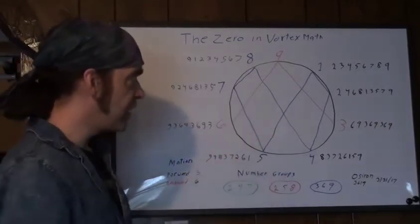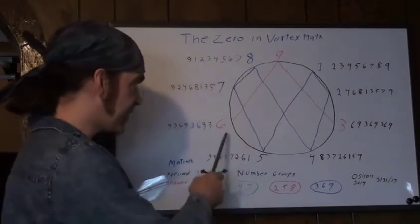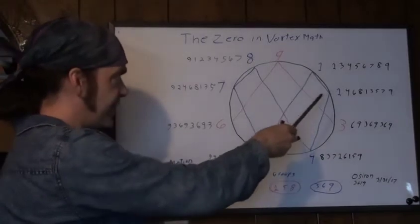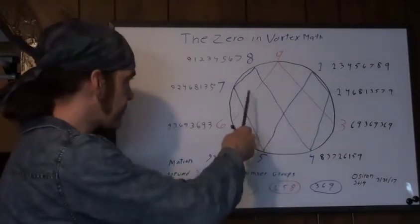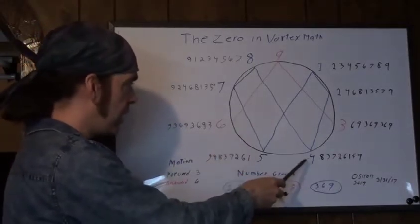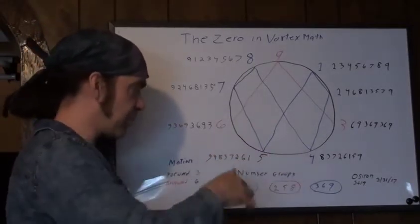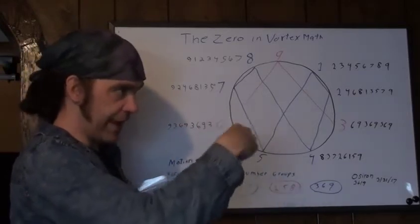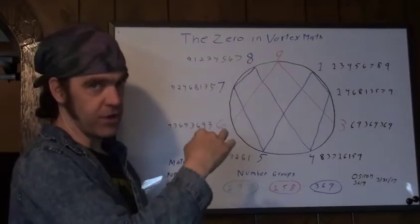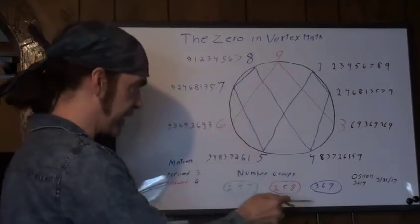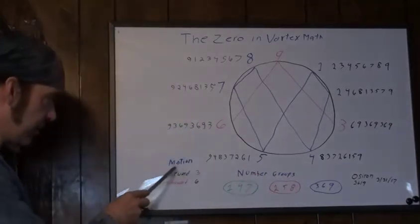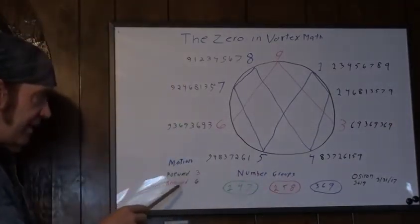Now, if you go backwards, adding six makes it go backwards. So now you got one, and you add six, six plus one is seven. Six plus seven is thirteen, which reduces to four. And then you keep going, and then it keeps going backwards. So three represents forward motion, six represents reverse motion. That's all, and that's one of the groups. And then you got the three, six, and nine, and it does the same thing.